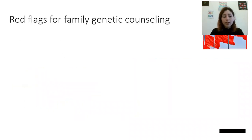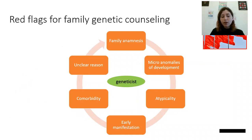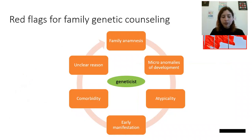Going back to genetic counseling, I've already mentioned the importance of red flags that help us to suspect a possible genetic condition. As you can see on the slide, these are the features of a family history that may cause a predisposition in other family members, and micro-abnormalities of development, which all of us may have, but only fewer than three.